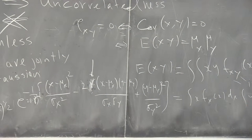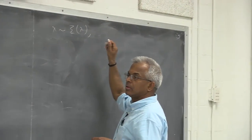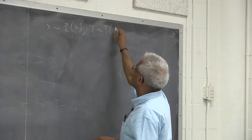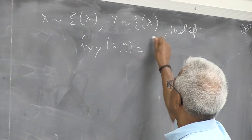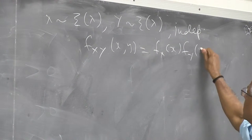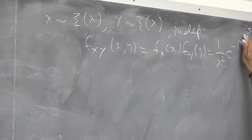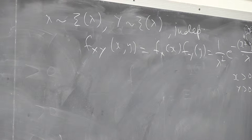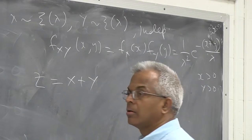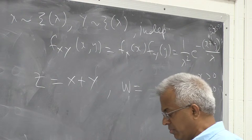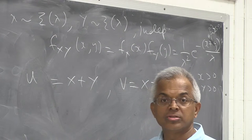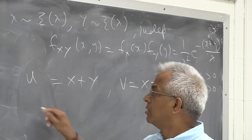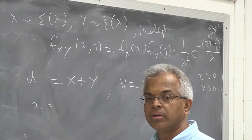But let me take any other case. For example, take x and y both exponential with parameter lambda — so they are independent with joint density f(x,y) = f_x(x)·f_y(y). Now I am going to generate new variables: define u = x + y and v = x − y. I want to find the joint density function of u and v. Solving back: x = (u+v)/2 and y = (u−v)/2.